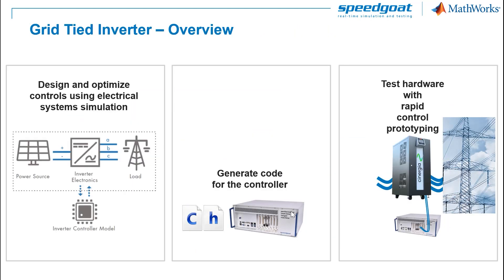To develop a controller for a grid-tied three-phase inverter, we'll start with desktop simulation including the solar panel, the inverter, and the grid. Once we're happy with the desktop simulation, we generate C and HDL code automatically from Simulink. We can then test our controller for the grid-tied inverter by connecting it to a Speedgoat target computer.